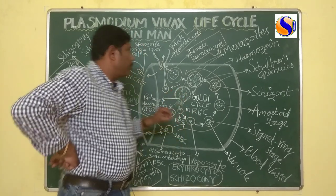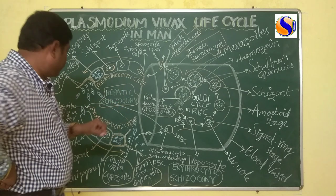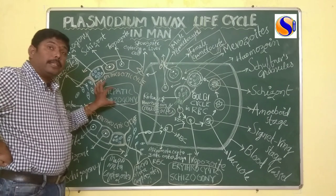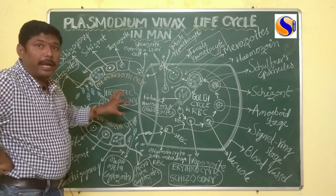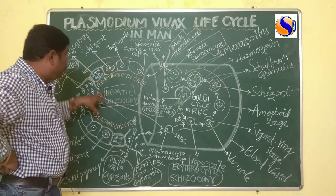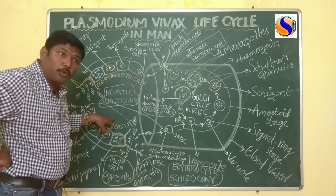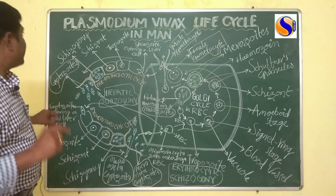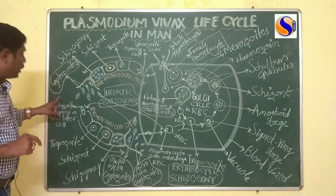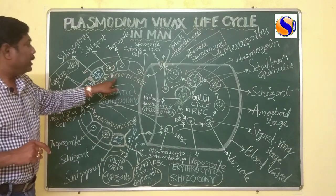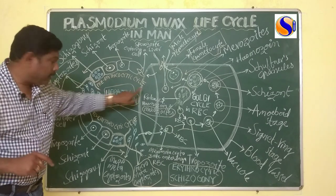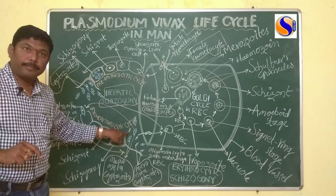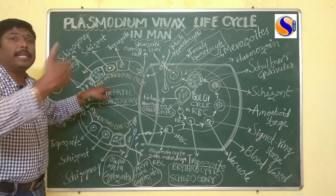Now I am discussing about Hepatic Schizogony. The Plasmodium in man completes Hepatic Schizogony in two cycles: one is called the pre-erythrocytic cycle, and the other is called the exo-erythrocytic cycle.